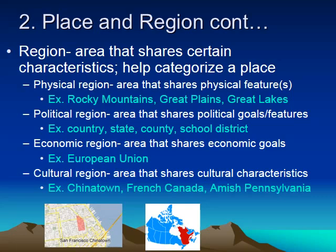Political regions are areas that share political goals or features — countries, states, counties, and school districts are all political regions. Economic regions are areas that share economic goals. A great example is the European Union, which is a group of European countries that share a common currency. NAFTA is another example — the North American Free Trade Agreement between Canada, the US, and Mexico that allowed free trade across borders.